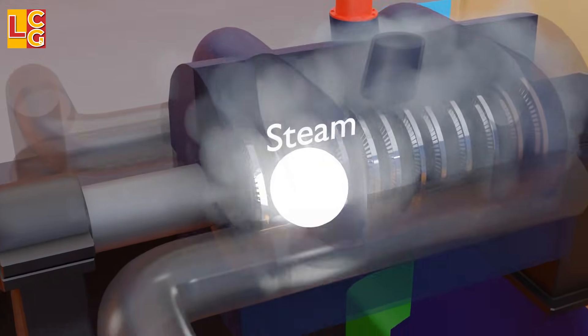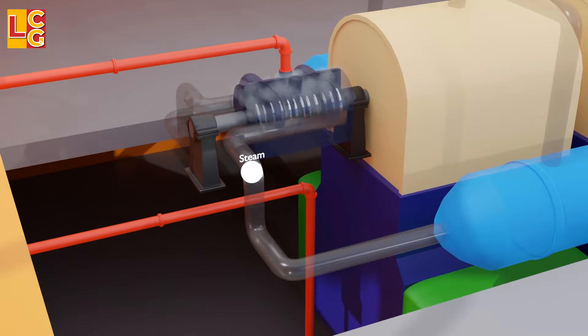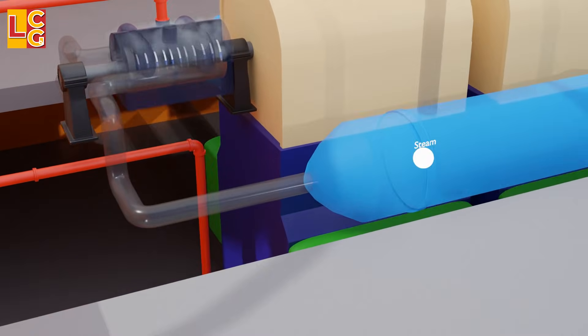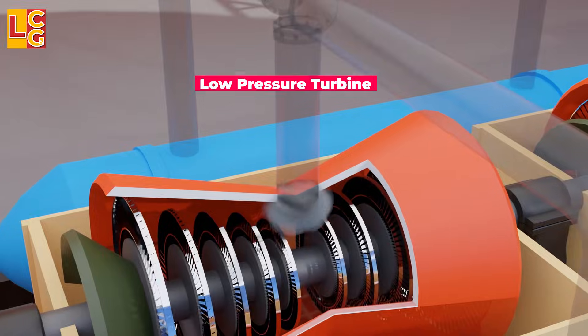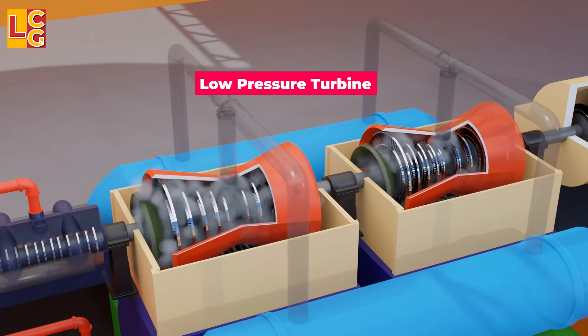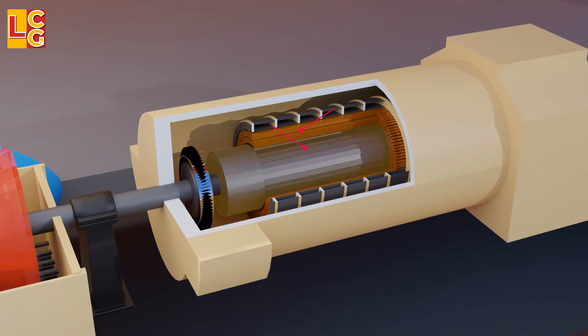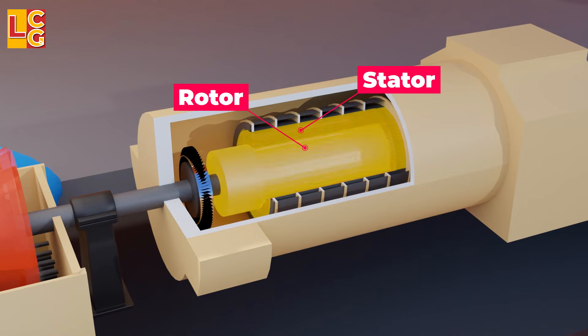After that, the steam then flows through the next set of pipes, going to the low-pressure turbines. This rotation of the turbines also rotates the rotor of the generator. This rotation of the rotor generates an alternating electric voltage which is induced in the stator, therefore creating the electricity.